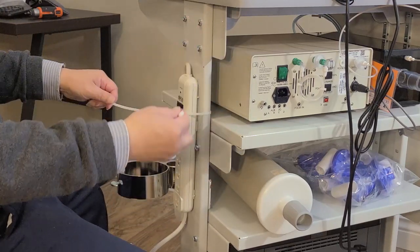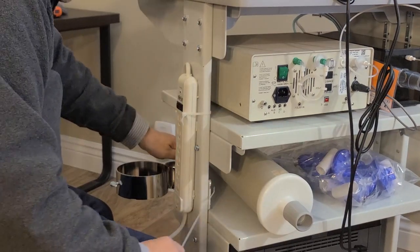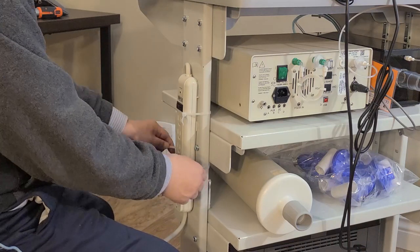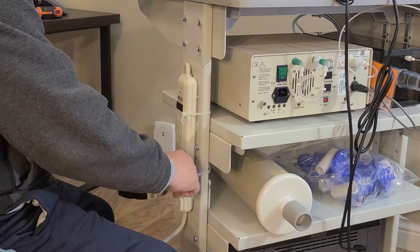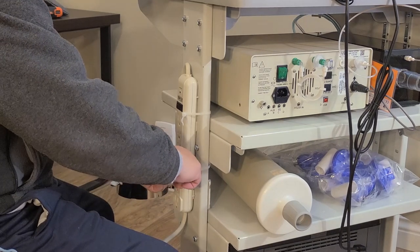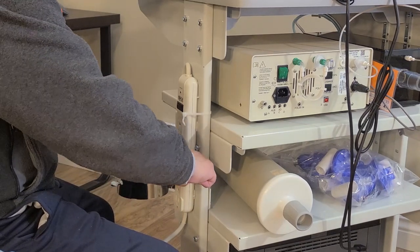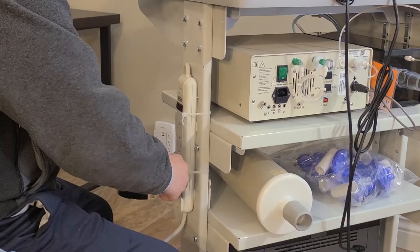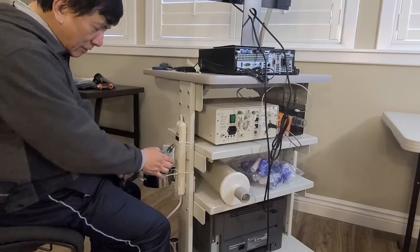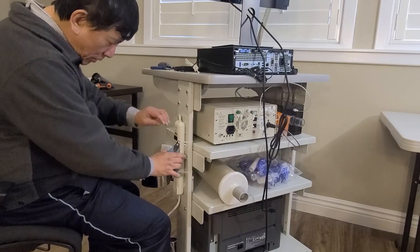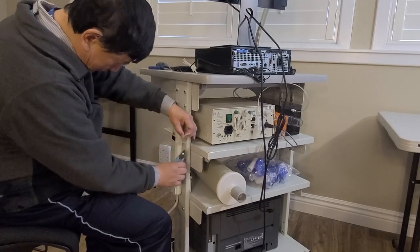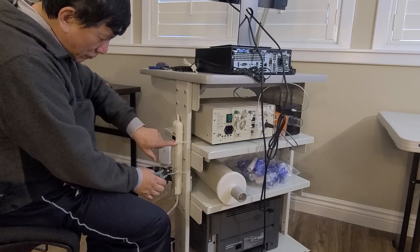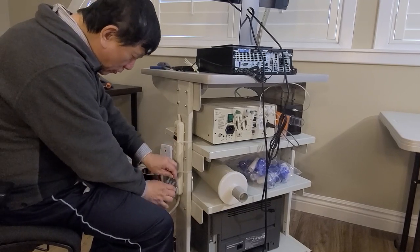Then you tie a second nylon tie under the fourth power socket. Then we cut the extra part. Just remember, you don't want extra tails poking out.